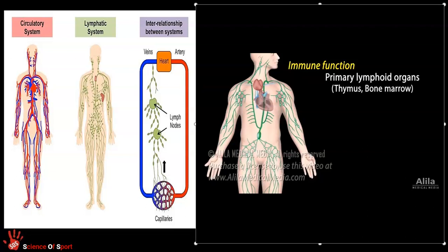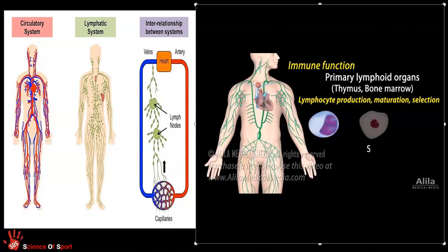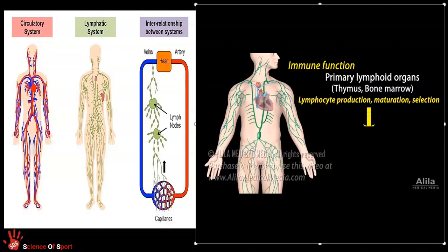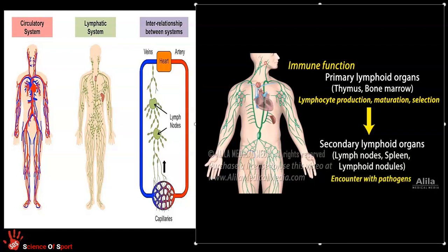Primary lymphoid organs, the thymus and bone marrow, are the sites of lymphocyte production, maturation, and selection. Selection is the process in which lymphocytes learn to distinguish between self and non-self, so they can recognize and destroy pathogens without attacking the body's own cells. Mature lymphocytes then leave the primary for the secondary lymphoid organs, the lymph nodes, spleen, and lymphoid nodules, where they encounter pathogens and become activated.